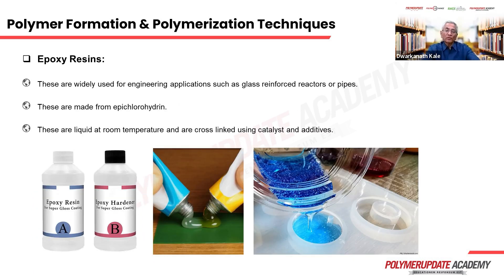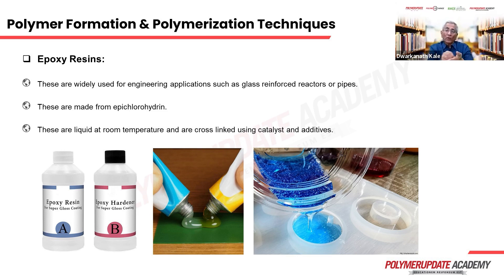Epoxy resins are used in araldites and also in chemical reactors — glass-reinforced epoxies are used to make reactor shells. As shown here, there are two tubes: one is the resin and the other is the hardener. When mixed together, they cross-link and become solid, just like araldite. One tube contains resin and the other contains cross-linking agent. Once mixed, there is a hardening time, and the application must be made before that window. The hardening times are listed on the product.